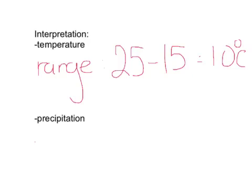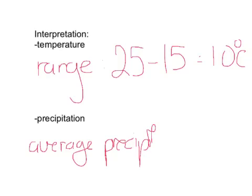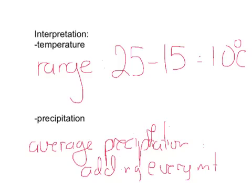For precipitation, the thing you'll often have to calculate is the average annual precipitation. This involves adding every month's value together. I haven't calculated the exact average annual precipitation for the Brisbane example, but from looking at it I would imagine it would be somewhere around 1000 millimetres, or thereabouts.